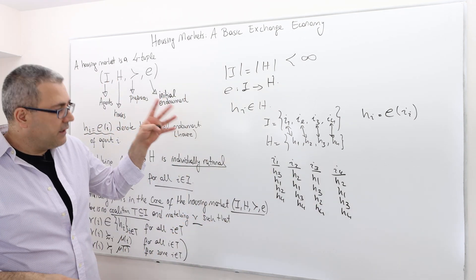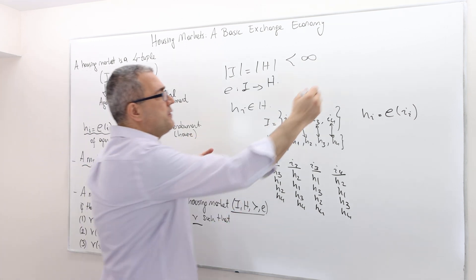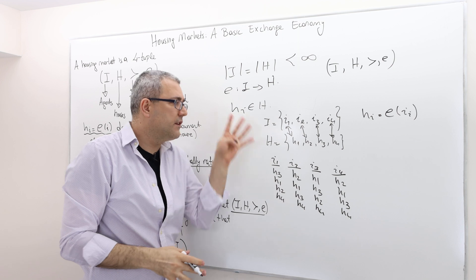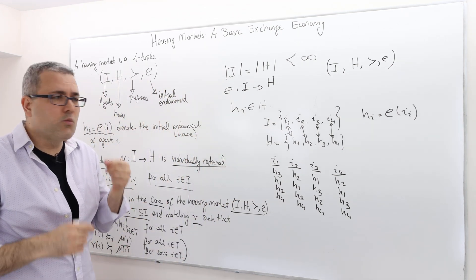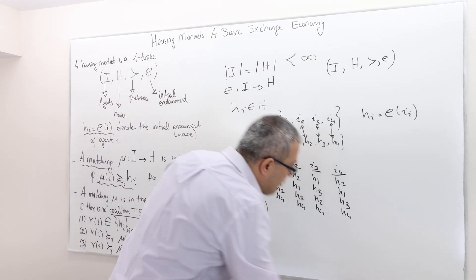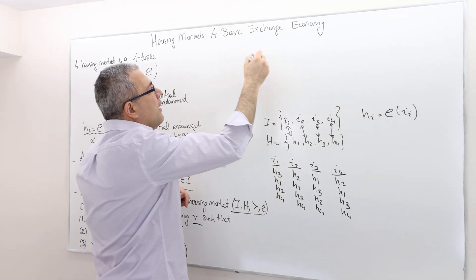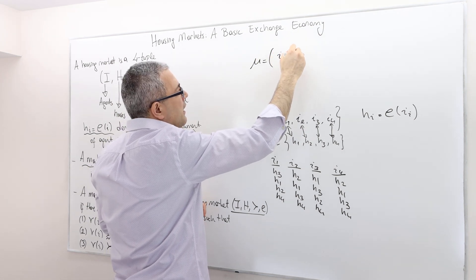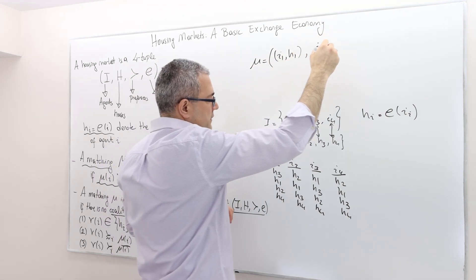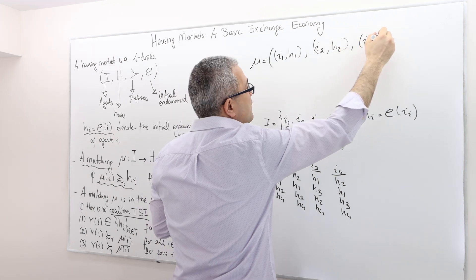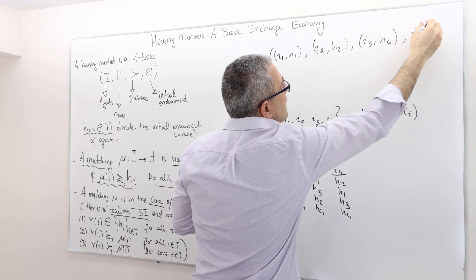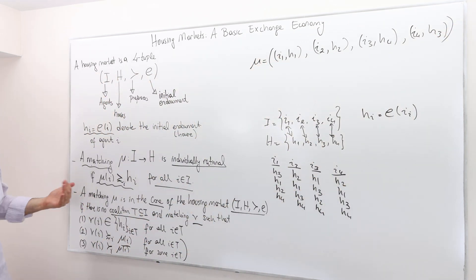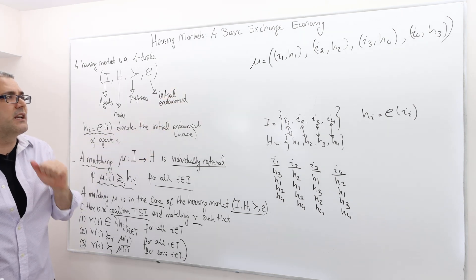So this is one housing market — I've specified individuals, houses, preferences, and initial endowments. Now I'm going to consider one arbitrarily picked matching. Let's say: individual 1 gets H1, individual 2 gets H2, individual 3 gets H4, and individual 4 gets H3. So this is one potential matching. The question is: can I say this matching is individually rational?